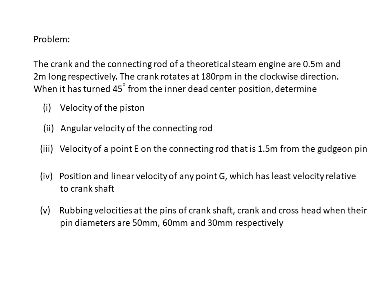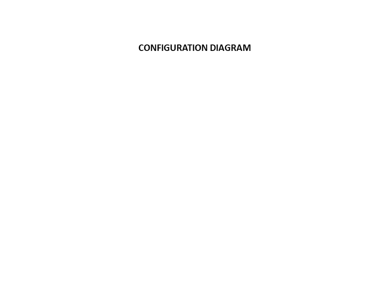The first step in any of these problems is to draw the configuration diagram. Let us look at the dimensions and create it. First, draw the fixed point — for any diagram, whether configuration, velocity, or acceleration, it always starts from the fixed point. In our case, the fixed point is the center bearing. Let us name it O. To O, the crank is connected; the connecting rod is connected to the crank; and the connecting rod is connected to the piston which lies inside the guides.